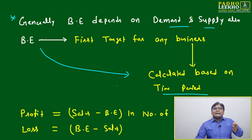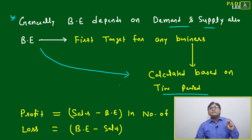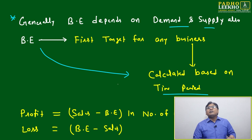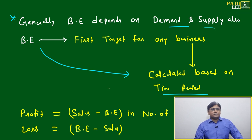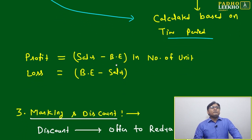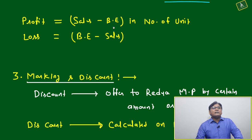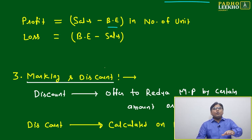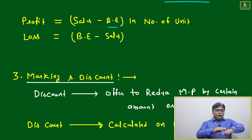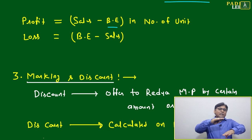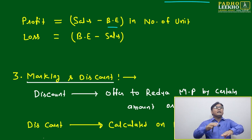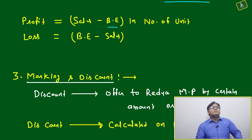Break-even is always calculated based on time period, and we can calculate it in two ways — either in terms of rupees (value) or in terms of units. If you have defined the break-even, then profit equals sales minus break-even. Whatever goes above the break-even point is your profit.